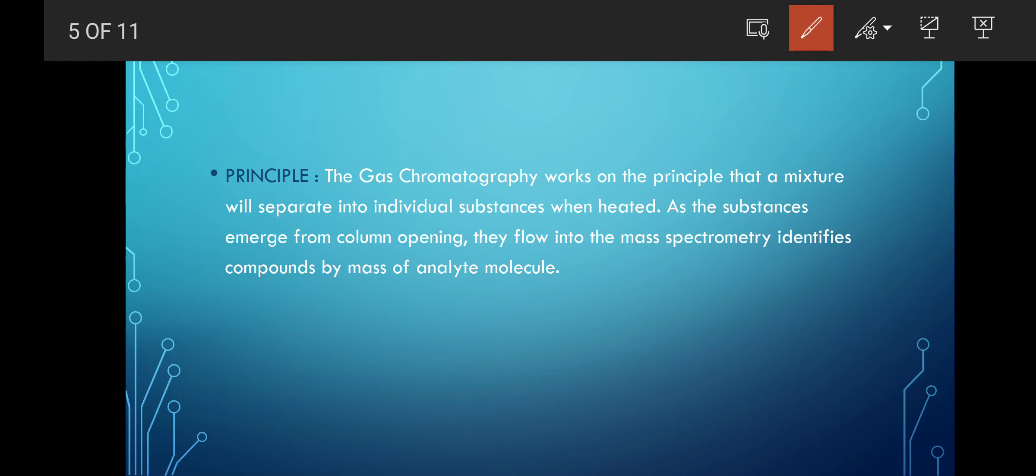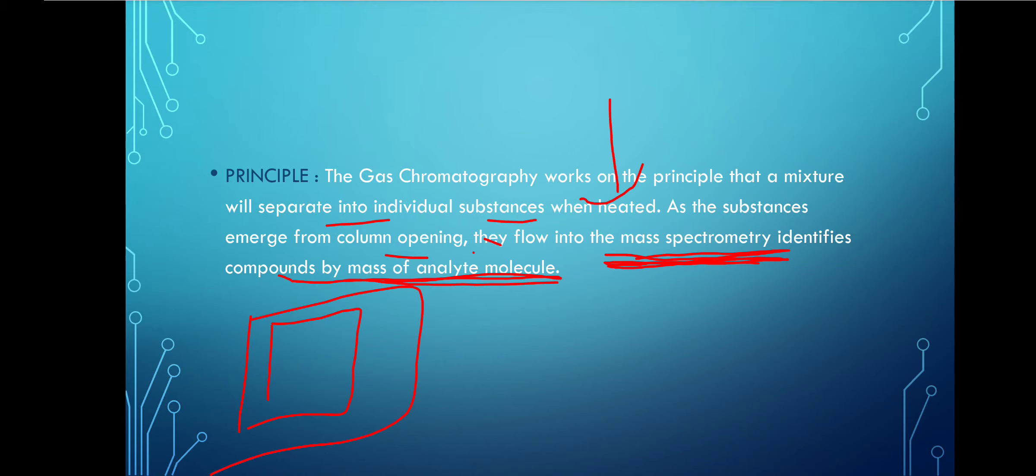The principle here is that GC works on the principle that each mixture is separated into individual substances when heated. As the substances emerge from the column opening, they flow into the mass spectrometry. In GC it was detected directly, but here we are connecting a mass spectrometry. It identifies the compound by mass analyte molecule. That's how we combine both together and get a result.